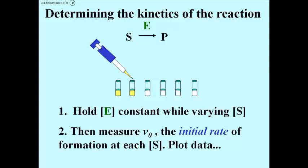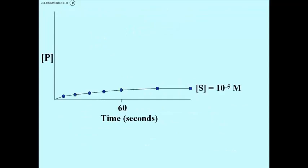So here is the plot. At a low substrate concentration of 10 to the minus 5th molar, we get product formation over, we may measure it over say 2 minutes, and we get product formation that looks like this.